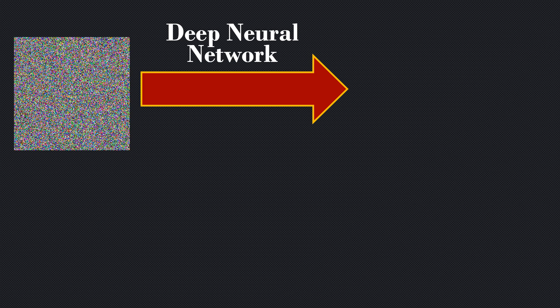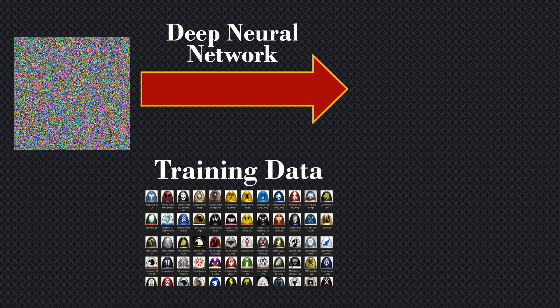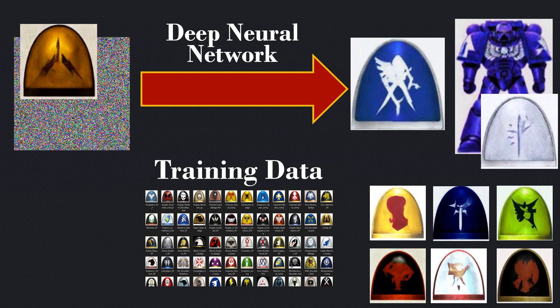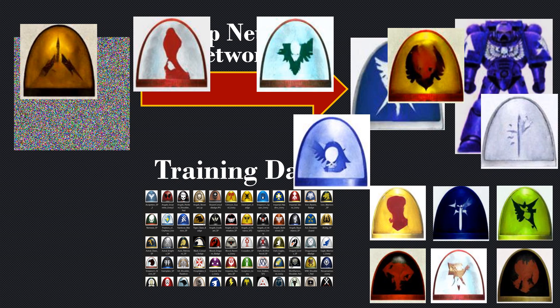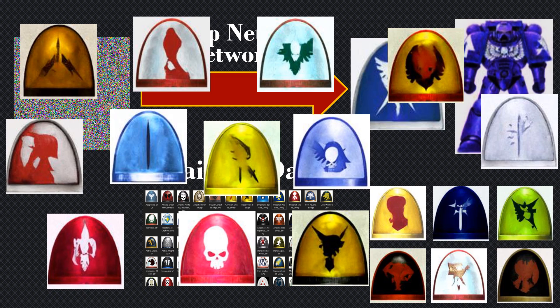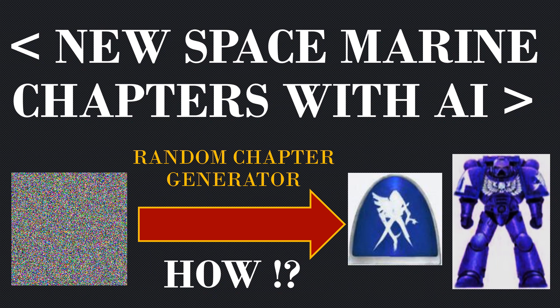With the power of modern AI, we can use a deep neural network to take random noise and train on images of all the existing Space Marine chapters, learn to generate new ones — lots of new ones. In fact, these models can generate unlimited new AI-generated Space Marine chapters.